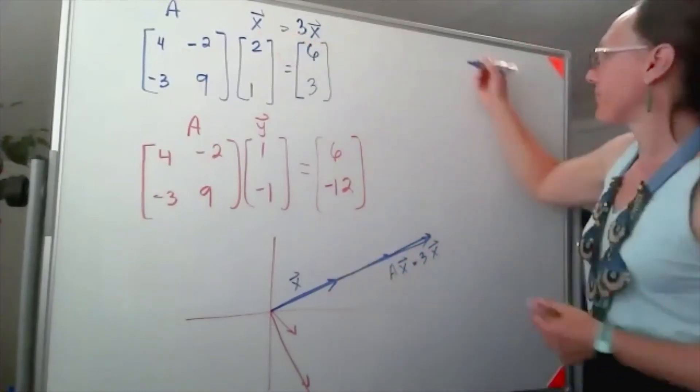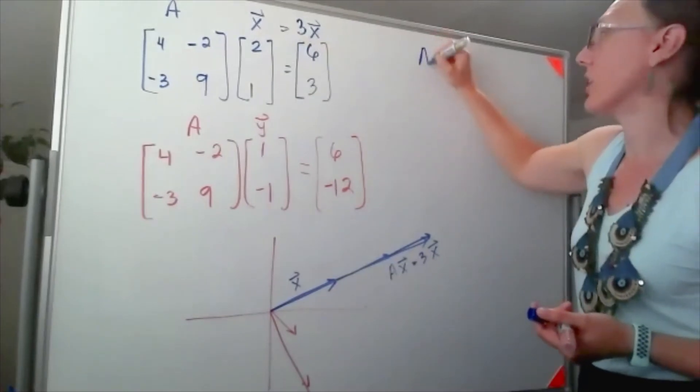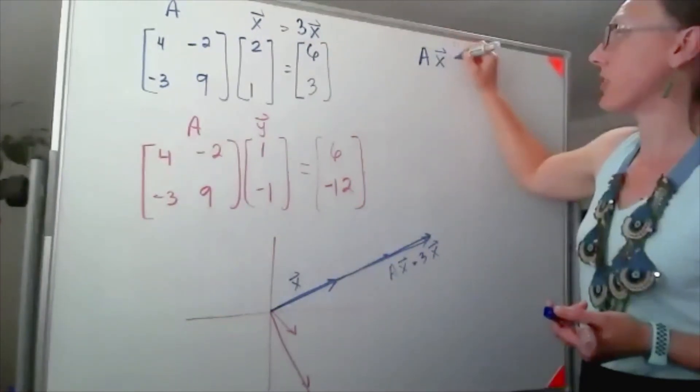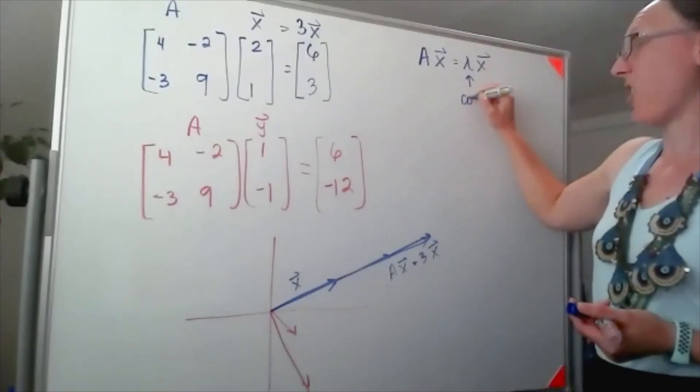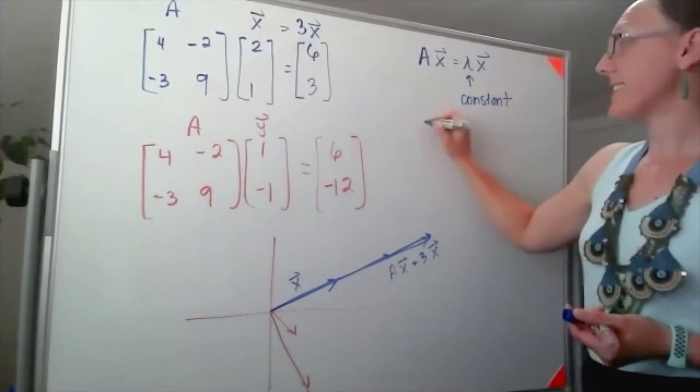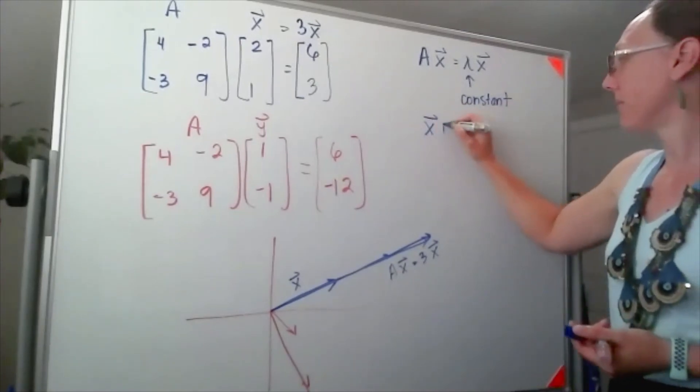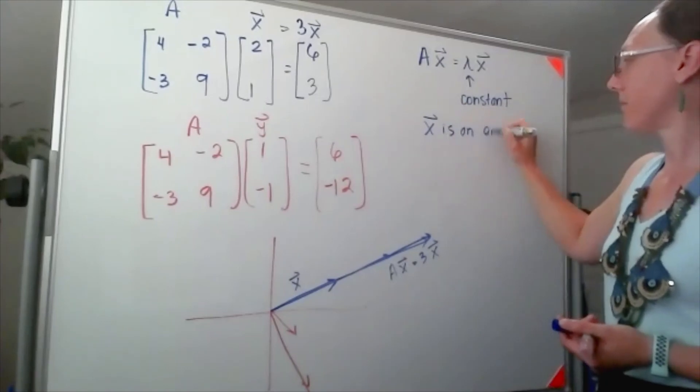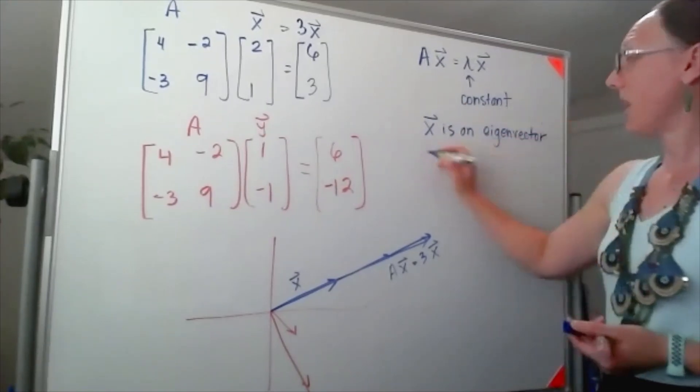So in general, any time that I end up with a situation where A times a vector is equal to lambda times the same vector, where this is a constant, I say that x is an eigenvector and lambda is the eigenvalue.